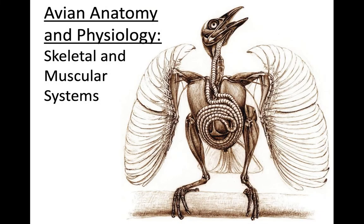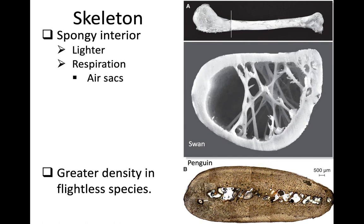This is going to be the first of several videos where we explore avian anatomy and physiology, and we're going to start off by looking at the skeletal and muscular systems. As I mentioned previously, bones in birds are relatively lightweight, especially the long bones, because of the fact that they have spongy interiors with these internal struts.